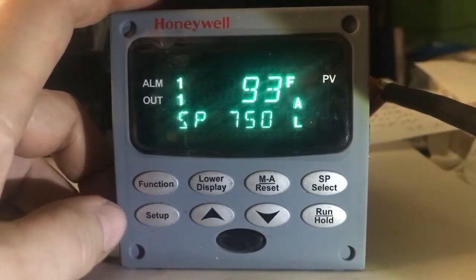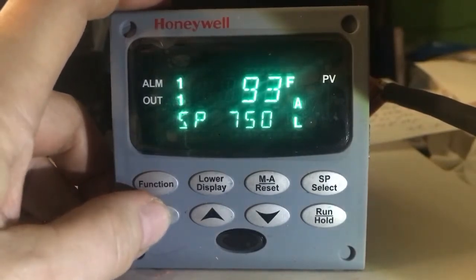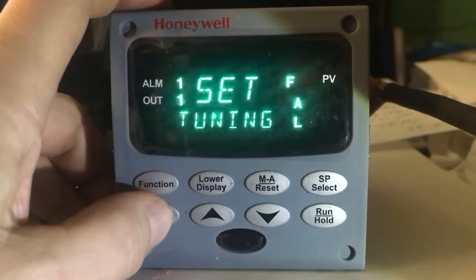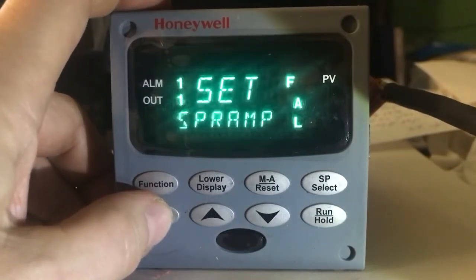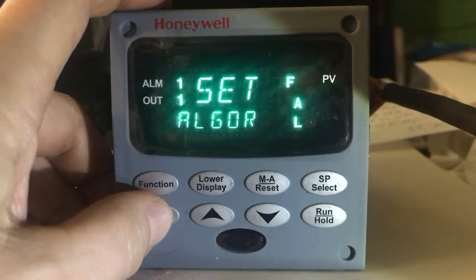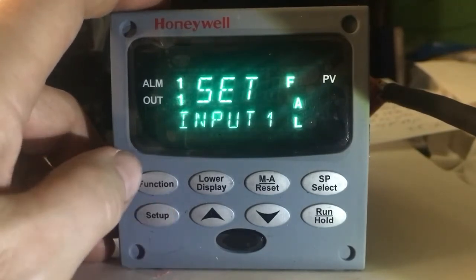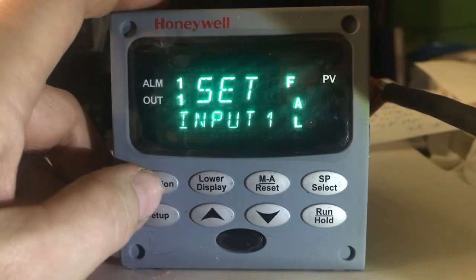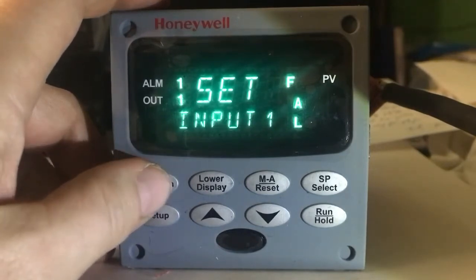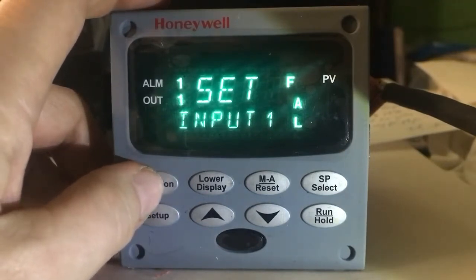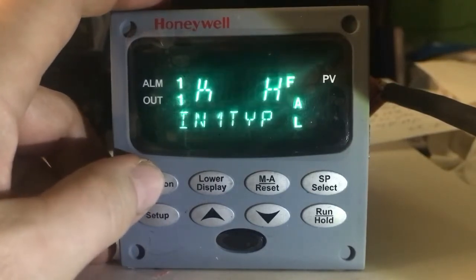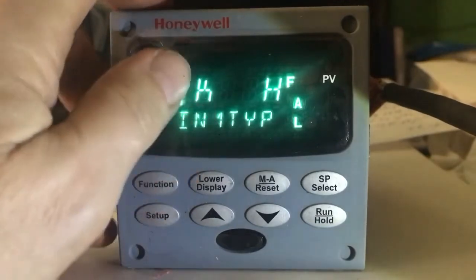You access it by pressing the setup key. Press the setup key repeatedly until you reach the input section. Once you get to the input group, you press the function key to go inside the input group. Press function and you find a thermocouple type.